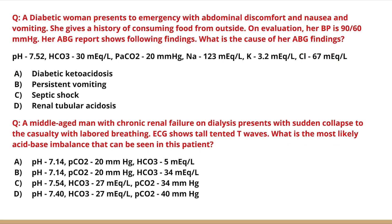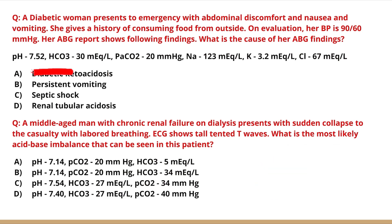Question 3: A diabetic woman presents with abdominal discomfort, nausea, and vomiting; BP 90/60; ABG shows pH 7.52, bicarbonate 30, PCO2 20, sodium 123, potassium 3.2, chloride 67. pH above 7.45 — alkalosis; DKA and RTA are ruled out. Electrolytes show low sodium, low potassium, low chloride with hypovolemia — hypovolemic, hypokalemic, hypochloremic alkalosis pointing towards persistent vomiting. Answer: persistent vomiting.